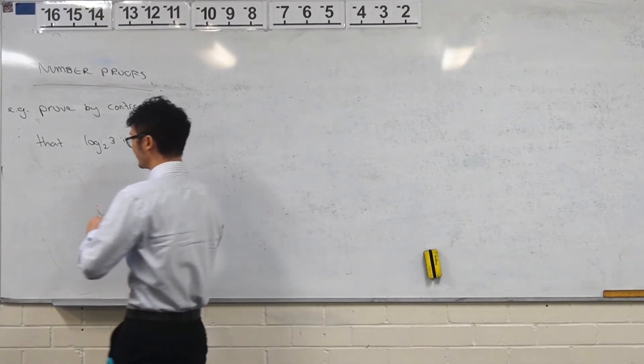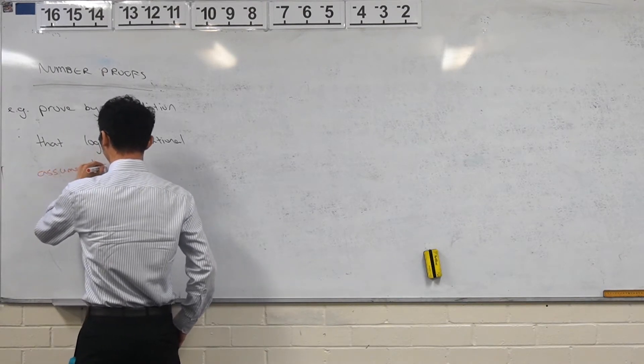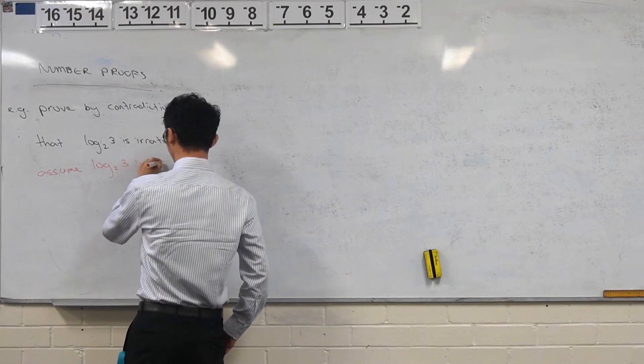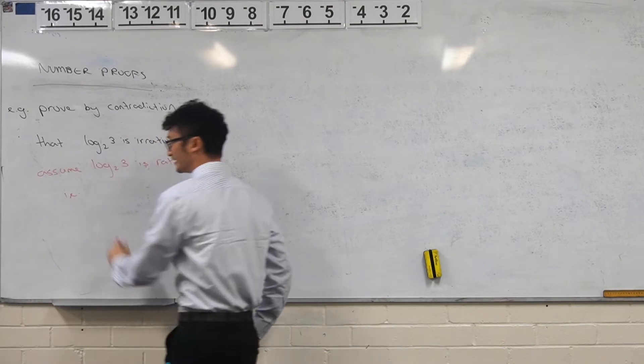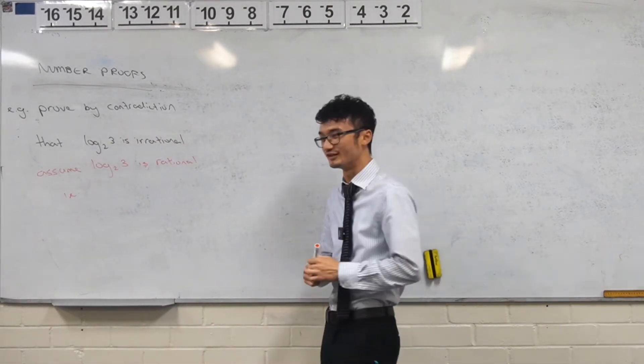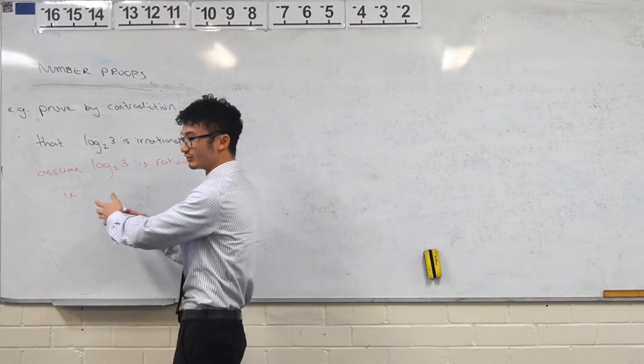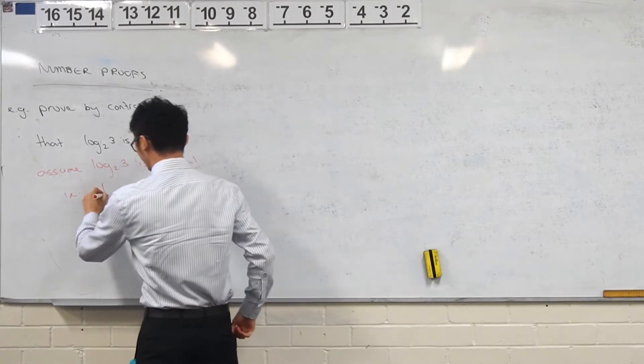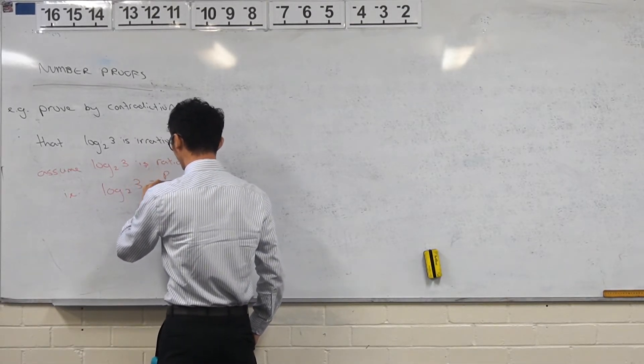So let's assume it's rational, right? So assume log base 2 of 3 is rational. So it's kind of different to like when you write a statement and then you have to prove it. Like this one, we're not required to prove that it's rational because we're assuming it, right? It's kind of like your second step of induction or whatever. But in this case we show it's not true.